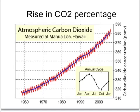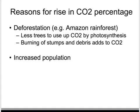Barring the small seasonal changes each year — more carbon dioxide in the summer due to more photosynthesis and less in the winter — why is this rise in atmospheric carbon dioxide happening? There are two main reasons. One is deforestation, the cutting down of trees such as in the Amazon rainforest. With fewer trees, less carbon dioxide is used up, allowing it to rise. A small amount of extra carbon dioxide is also produced by burning the stumps and debris. Additionally, an increased world population means more people burning more fuel, producing more and more carbon dioxide by combustion.